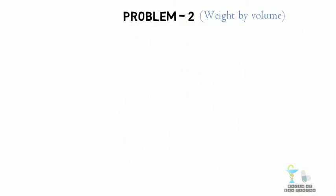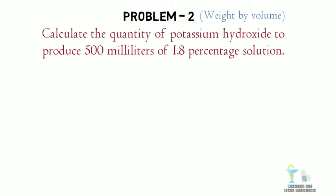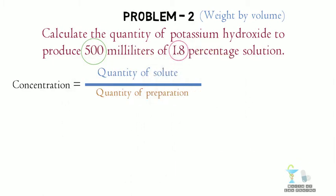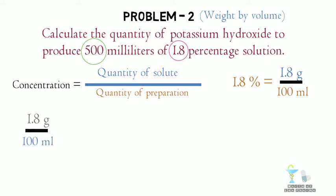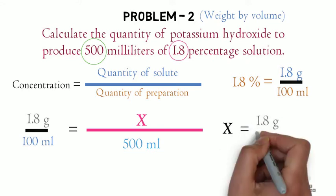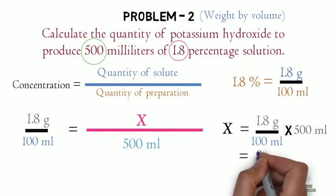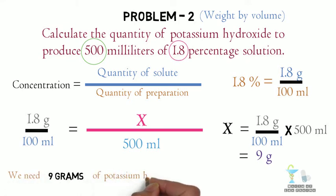Now another problem for weight by volume: calculate the quantity of potassium hydroxide to produce 500 milliliters of a 1.8% solution. The quantity of preparation is 500 milliliters and the concentration is 1.8%. Applying the concentration formula: 1.8 g / 100 mL, with quantity of preparation 500 mL, solving for x gives x = (1.8/100) × 500. The final answer is 9 grams of potassium hydroxide.